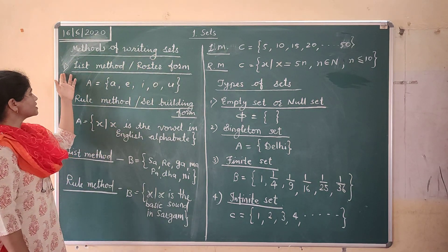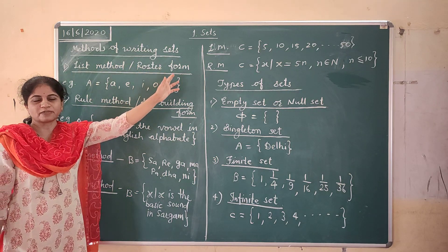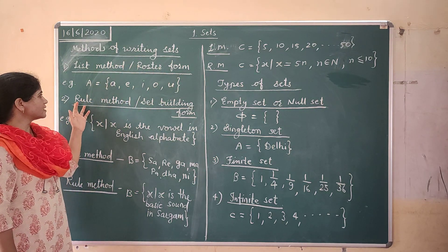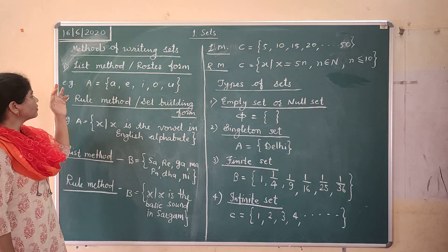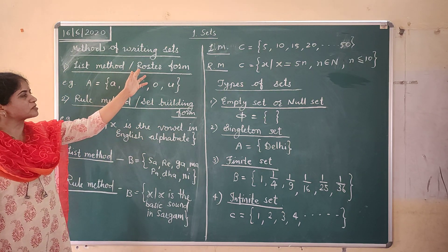So first is list method or roster form and second method is rule method or set builder form. Now what is the list method or roster form?